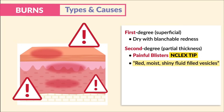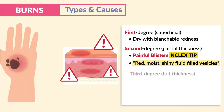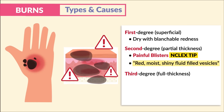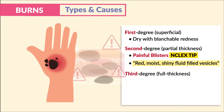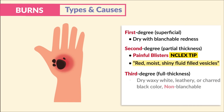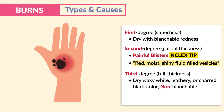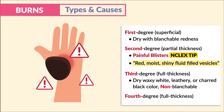Third degree burns are full thickness burns. We have three layers of skin destruction: the epidermis, the dermis, and possible subcutaneous tissue. Key terms to know: dry, waxy white, leathery, or even charred black color that is non-blanchable skin — big key terms for exams.